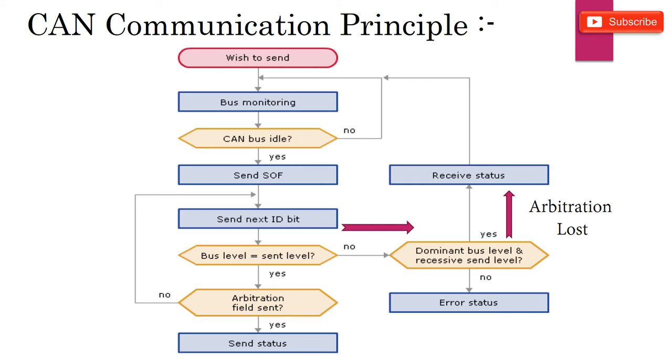During this phase, if this node detects a dominant bit on the bus while it has transmitted a recessive bit, it clearly means that the node has lost the arbitration and it stops sending the further bits. It waits and tries again once the bus is free again.